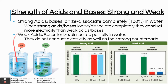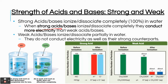Every single HCl became H+ and Cl-, whereas with a weak acid like H2CO3, not every molecule became HCO3- and H+. Only a few did. For that reason, strong acids and strong bases are better at conducting electricity than weak acids and weak bases, because they have more ions in solution. Weak acids and weak bases will not conduct electricity as well because there are not as many ions.